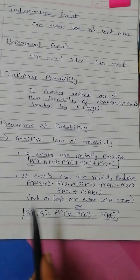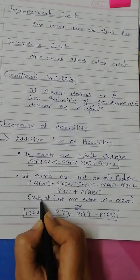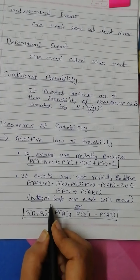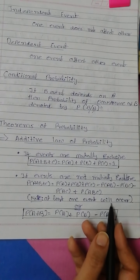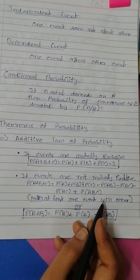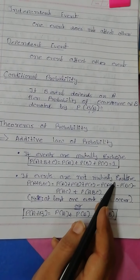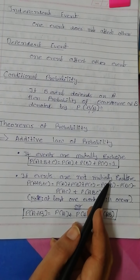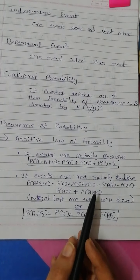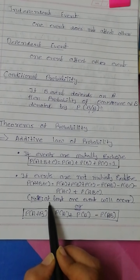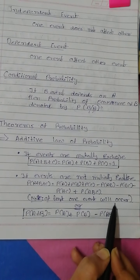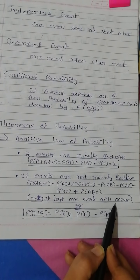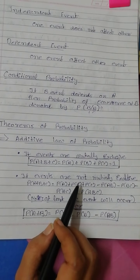An important note: when at least one event will occur out of a number of events, the non-mutually exclusive additive law will be applied. Remember — at least one event occurring means you apply this additive law.